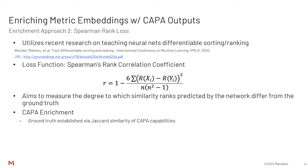This is actually one of the major contributions of this work. We address this with a Spearman rank loss. We utilize recent research on teaching neural networks sorting and ranking. Specifically, our loss uses the Spearman rank correlation coefficient. The idea is that, with respect to ground truth ranks on similarities, we want our neural network to match those as closely as possible. For similarity, we use a set-wise similarity between sets of CAPA attributes — specifically, we use the Jaccard similarity toward this end.